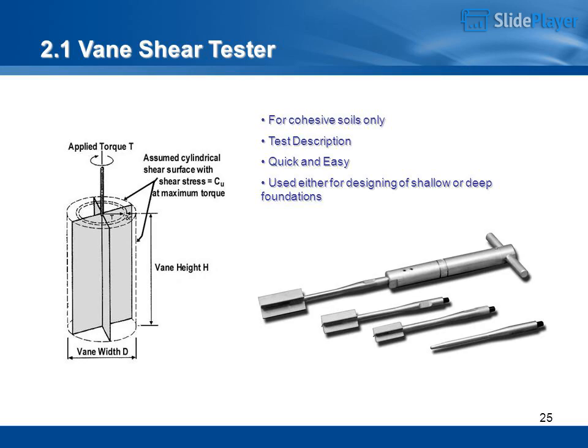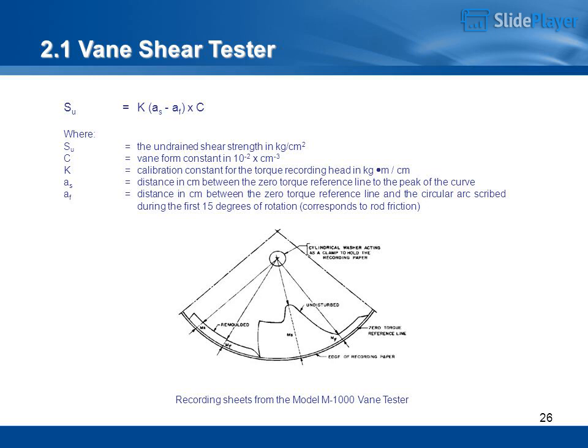The Vane Shear Tester is for cohesive soils only. It is quick and easy, and used for designing shallow or deep foundations. Formula: SU = K × (AS − AF) × C, where SU is the undrained shear strength in kg/m², C is the vane form constant (×10⁻² m³), K is the calibration constant for the torque recording head (kgm/m), AS is the distance between the zero torque reference line and the peak of the curve, and AF is the distance between the zero torque reference line and the circular arc during the first 15 degrees of rotation, corresponding to rod friction.